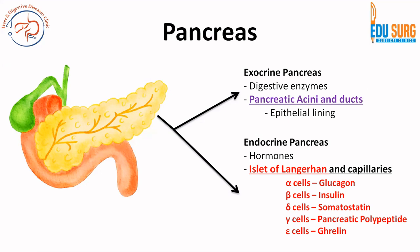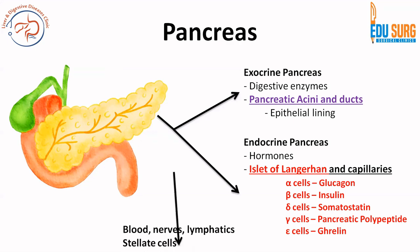The endocrine pancreas produces hormones. To complete the list: alpha cells release glucagon, beta cells release insulin, delta cells release somatostatin, gamma cells release pancreatic polypeptide, and epsilon cells release ghrelin. So there are five types of cells in the islets of Langerhans and their respective hormones.